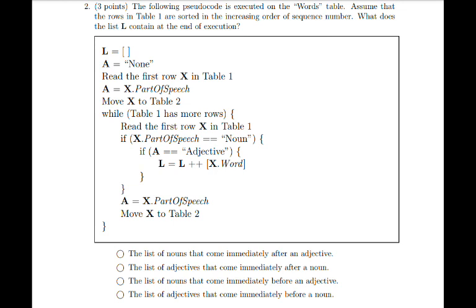The question reads, the following pseudocode is executed on the words table. Assume that the rows in table 1 are sorted in the increasing order of sequence number. What does the list L contain at the end of execution?